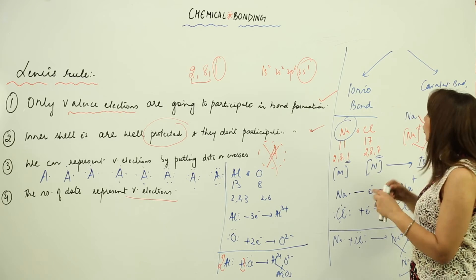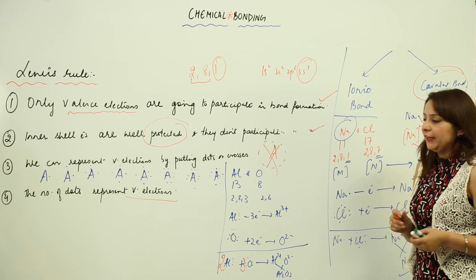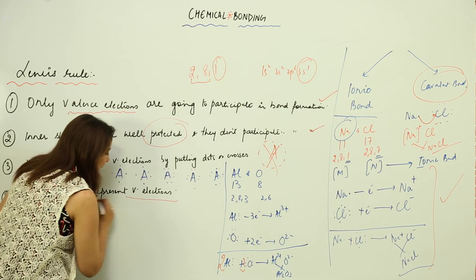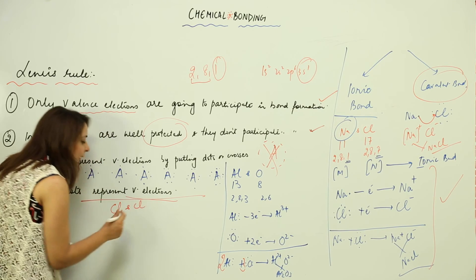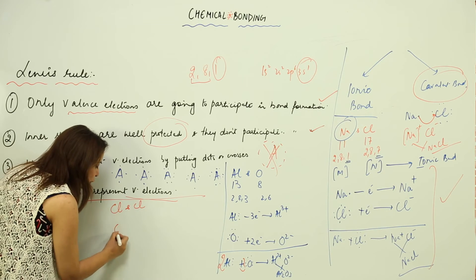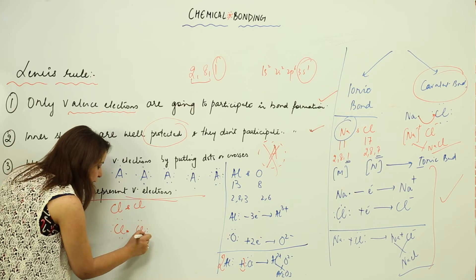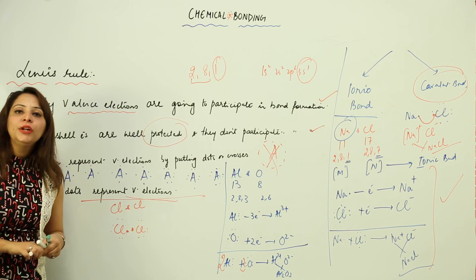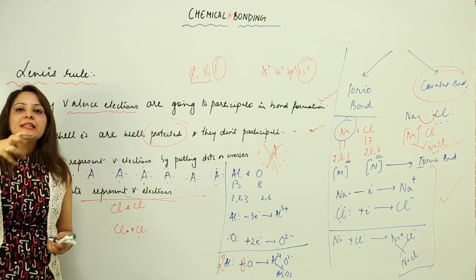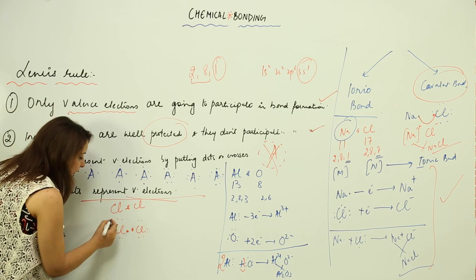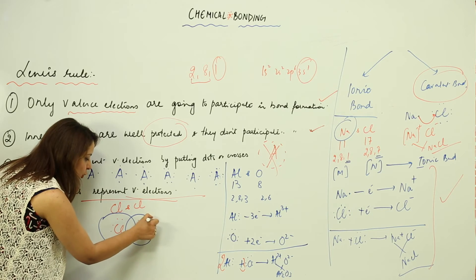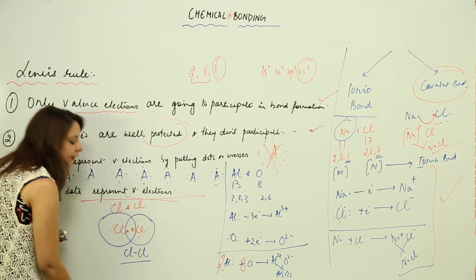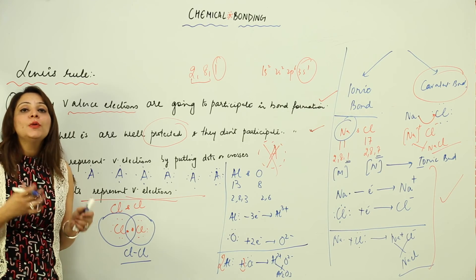When we talk about covalent bonds, we have to show sharing of electrons. For a chlorine molecule, one chlorine combines with another chlorine — both have seven electrons and are deprived of one electron each. Since they need to share only one electron, you put that shared electron in the middle between them. Each has seven electrons and shares one, resulting in a single bond between them. This bond in Cl₂ is formed by mutual sharing of electrons.